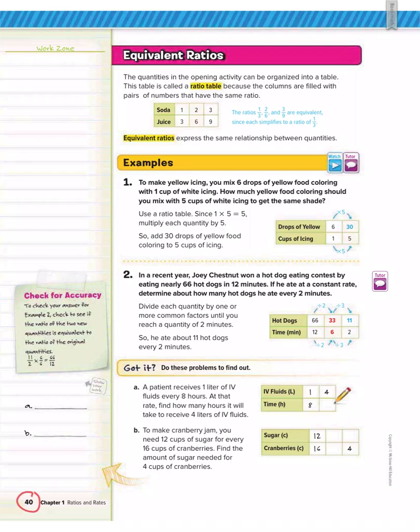Today we're going to start on page 40, and we're going to talk about ratio tables. So this is an example of a ratio table. Ratio tables have equivalent fractions, and they're equivalent ratios because they all simplify to the same thing.